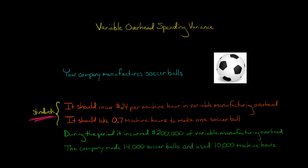Now, a company doesn't have to use machine hours. It could use direct labor hours or some other activity base, but we're just going to assume that this company's activity base is machine hours. So $24 per machine hour is the standard, and we're just looking at variable manufacturing overhead, not total manufacturing overhead.